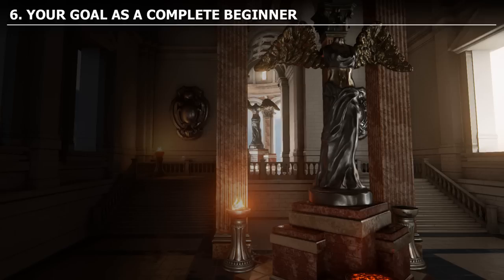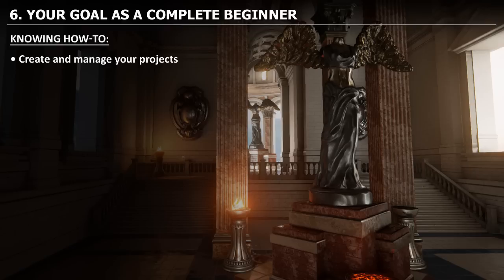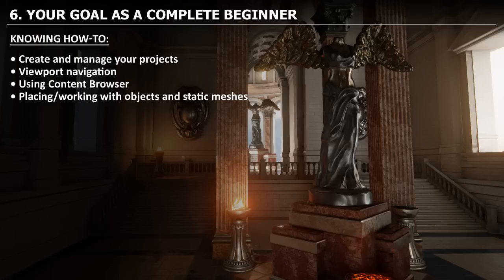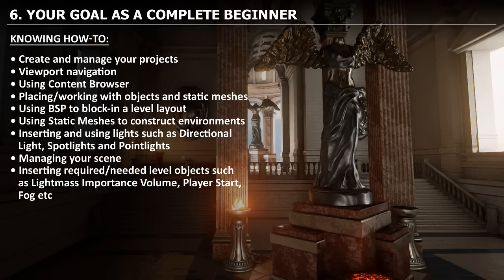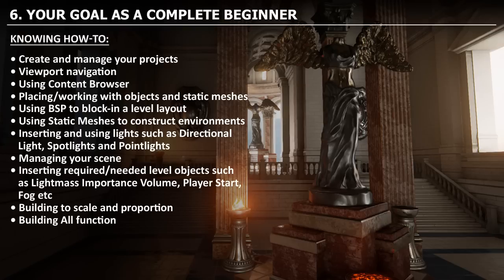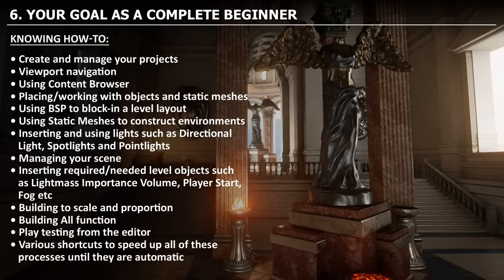As a complete beginner, you should start by learning: how to create and manage projects, viewport navigation, using the content browser, working with objects and static meshes, using BSP to block in a level layout, inserting and using different lights such as directional, spotlight, and point light, managing your scene with required actors like a light mass importance volume, player start, and fog, building your environment to correct scale and proportion, building or rendering your environment, and using play-test shortcuts to speed up your workflow.